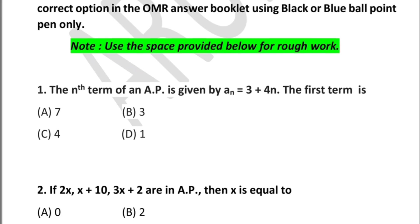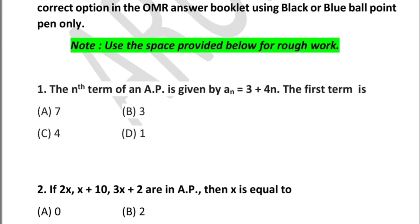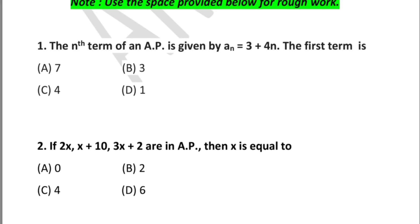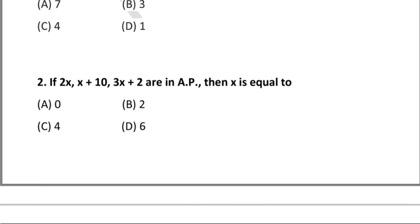Consider this as a practice test. First question: the nth term of an AP is given by aₙ = 3 + 4n. Then the first term is — option A: 7, option B: 3, option C: 4, option D: 1.